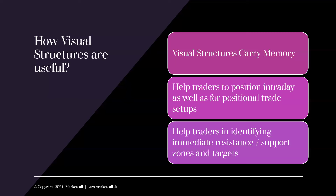And then we have weaker hand traders — mostly emotional traders whose trading location is mostly at the very last moment. They come to the party and join it — we call them laggards. Many times they get into a trap because of emotional decisions. Visual structures do carry memory — they have a memory point. It helps traders position intraday as well as positional trade setups, and helps identify immediate resistance and immediate support zones — not long-term support but support for the next two to ten days, as a trader, not an investor.